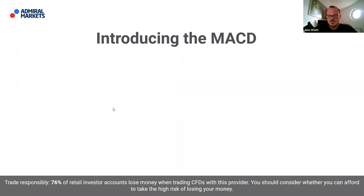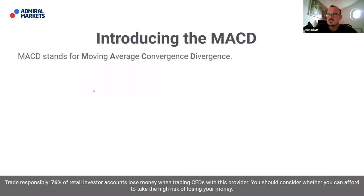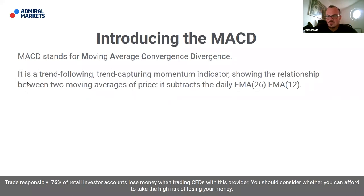Now let's introduce one of the main indicators: the MACD. You've probably heard about it — it stands for Moving Average Convergence Divergence. It is a trend-following, trend-capturing momentum indicator. The name 'moving average' already signals something to do with trends, and 'convergence divergence' means the lines sometimes diverge and then converge again.